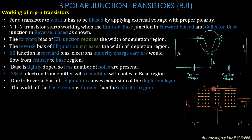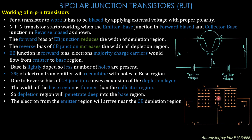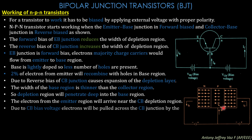The depletion region penetrates deep into the base region, allowing electrons to start from the emitter, penetrate the base, and enter the collector region. The electrons from the emitter arrive near the collector-base depletion region, and due to the VCB bias voltage, they are pulled across the collector-base junction by the positive terminal of the collector battery.